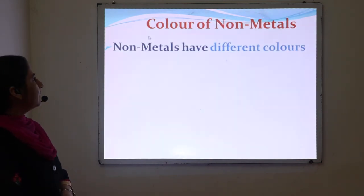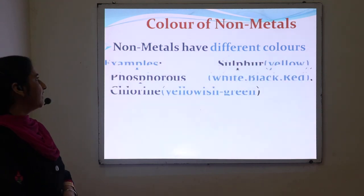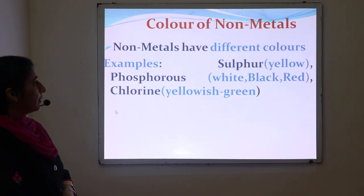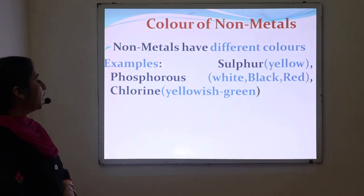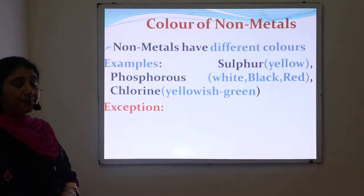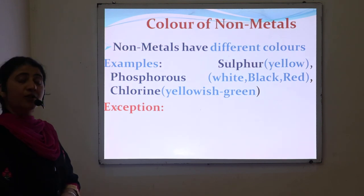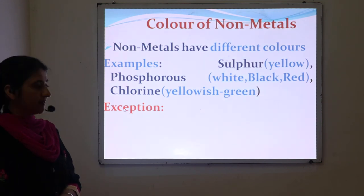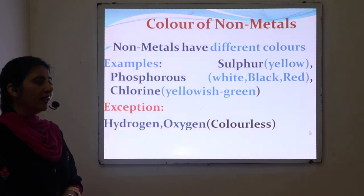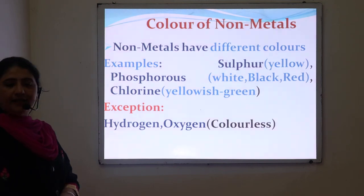Next is colors of non-metals. Non-metals generally have different colors — for instance, sulfur is yellow, phosphorus is present in white, black, and red color, and chlorine is present in a yellowish-green color. But there are a few exceptions of non-metals that are colorless — for instance, hydrogen and oxygen are non-metals that are colorless gases.